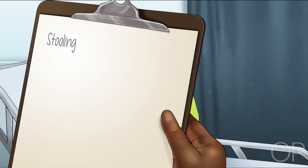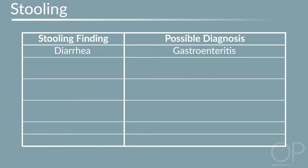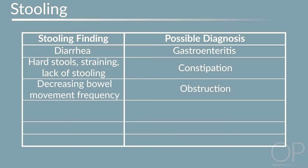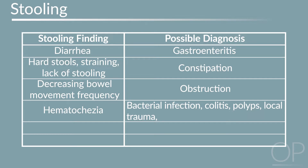A detailed stooling history including number of stools per day, form of stool, and presence or absence of blood in the stool is very important. Gastroenteritis often presents as diarrhea, while hard stools, straining, or lack of stooling signify constipation. Alternatively, decreasing bowel movement frequency may be observed with obstruction. Hematochezia often indicates a left colonic source and may be seen with bacterial infection, colitis, polyps, or local trauma including anal fissures and hemorrhoids.